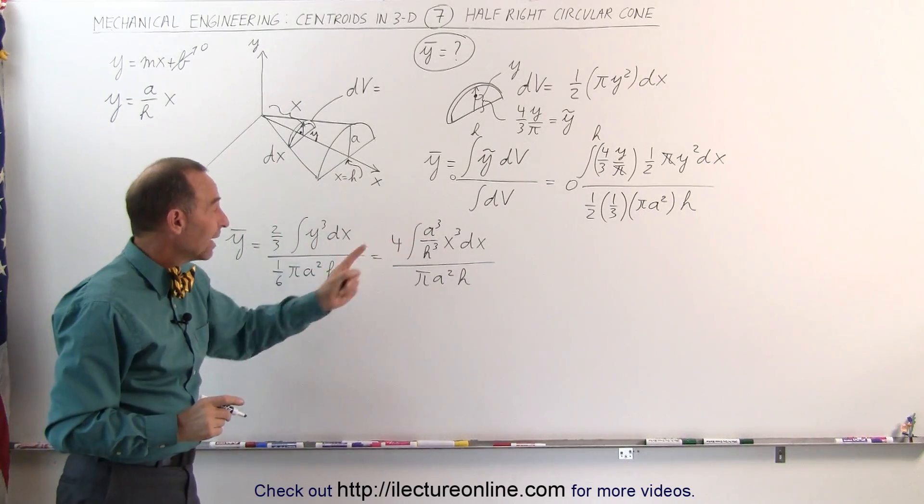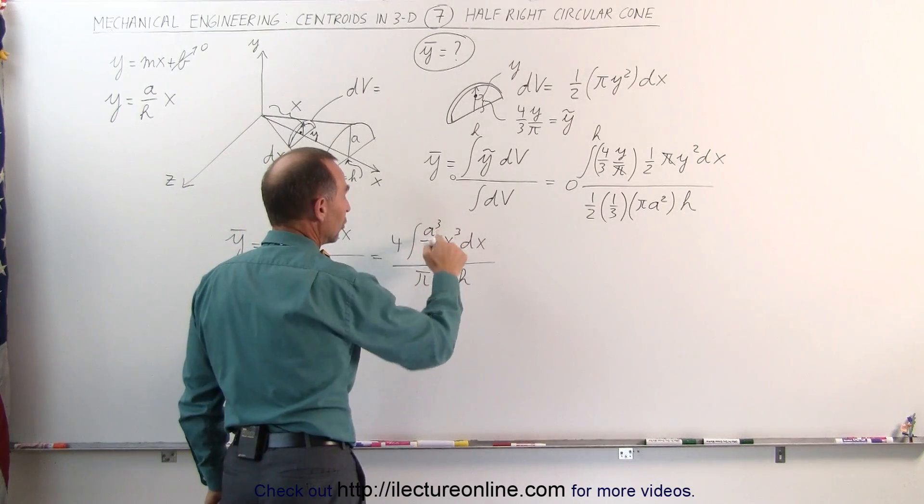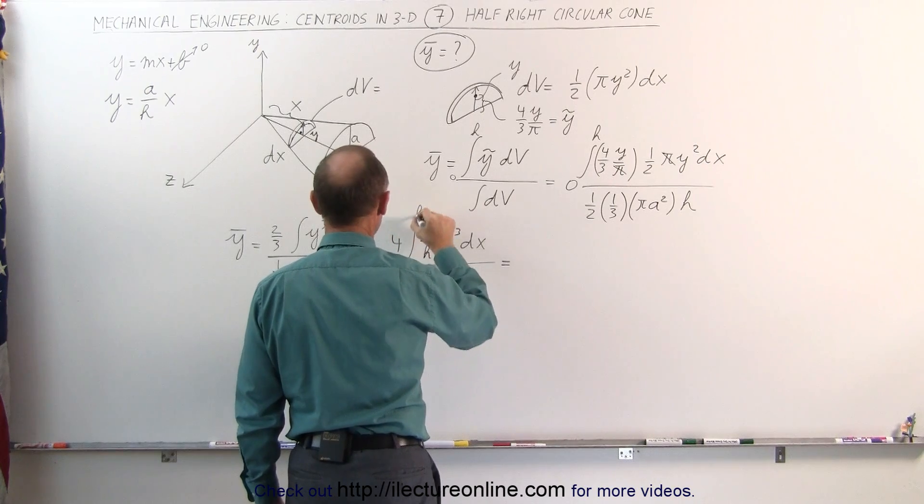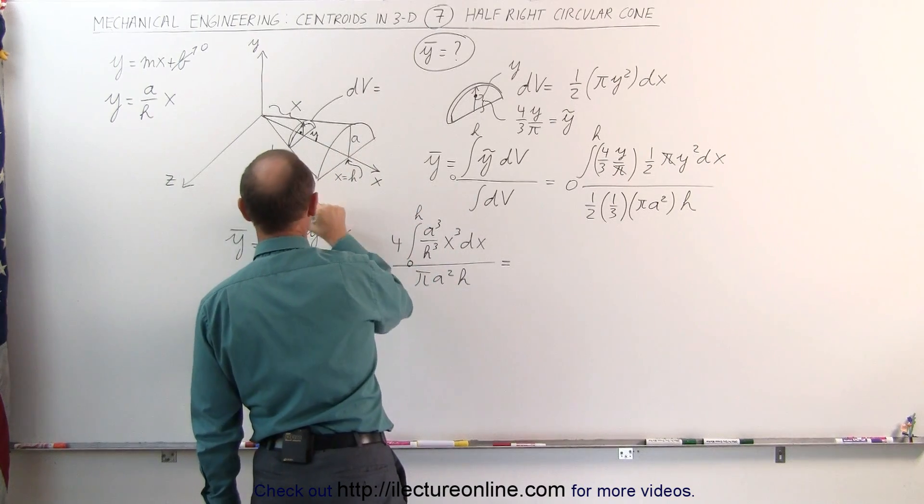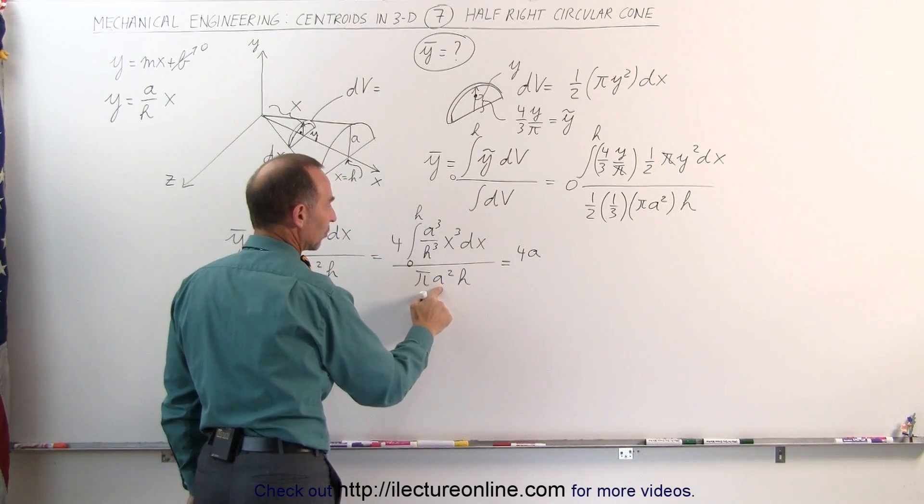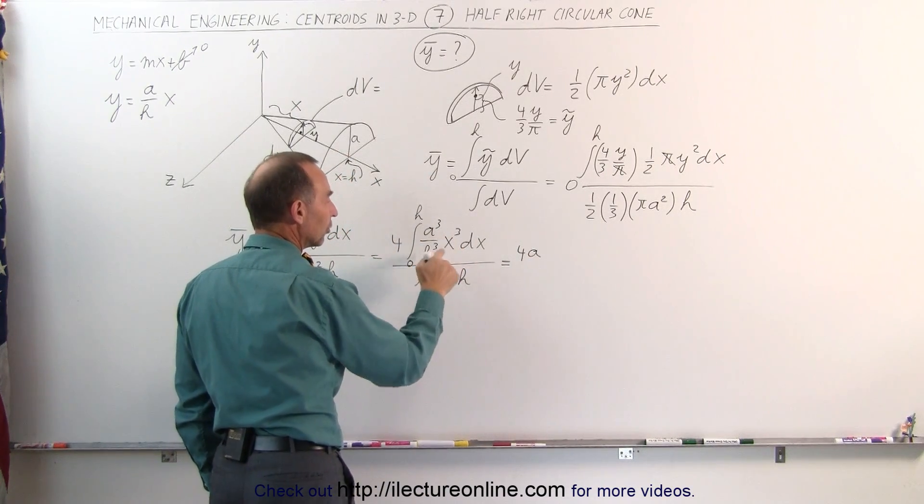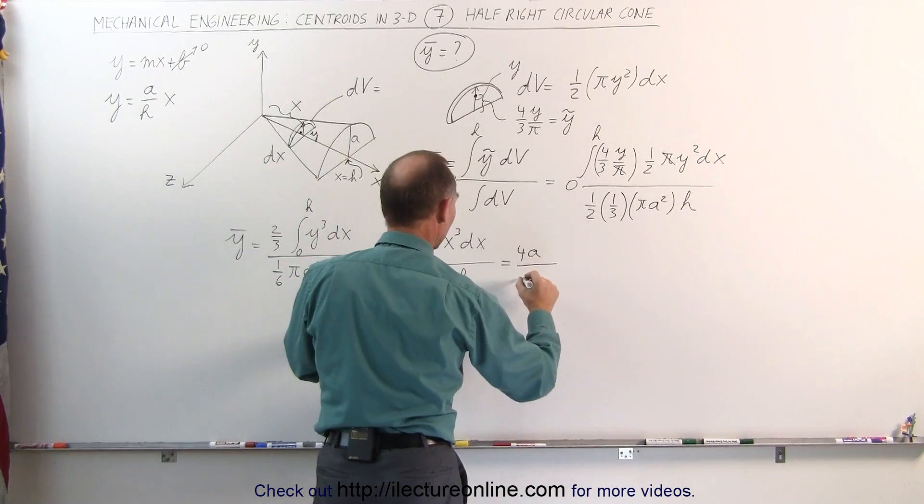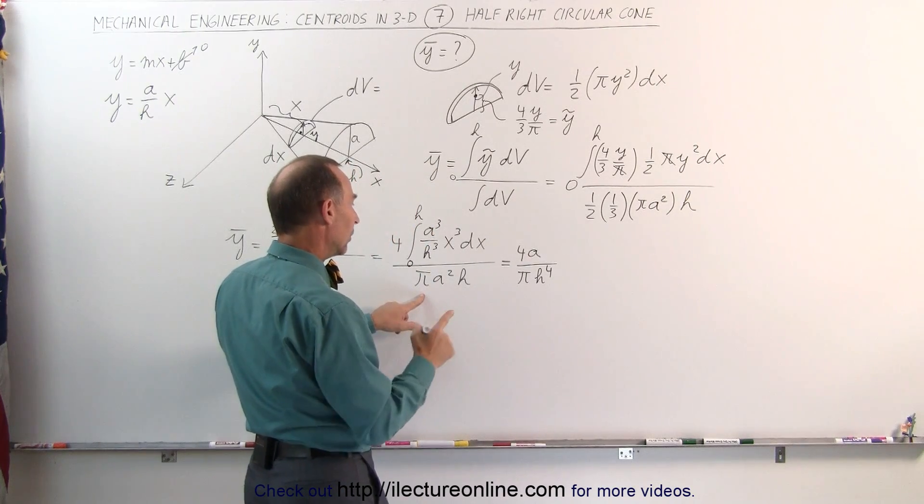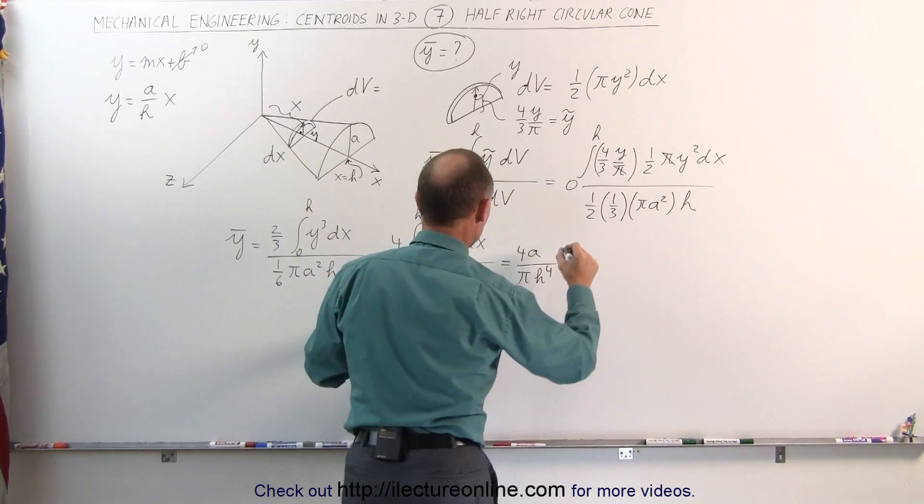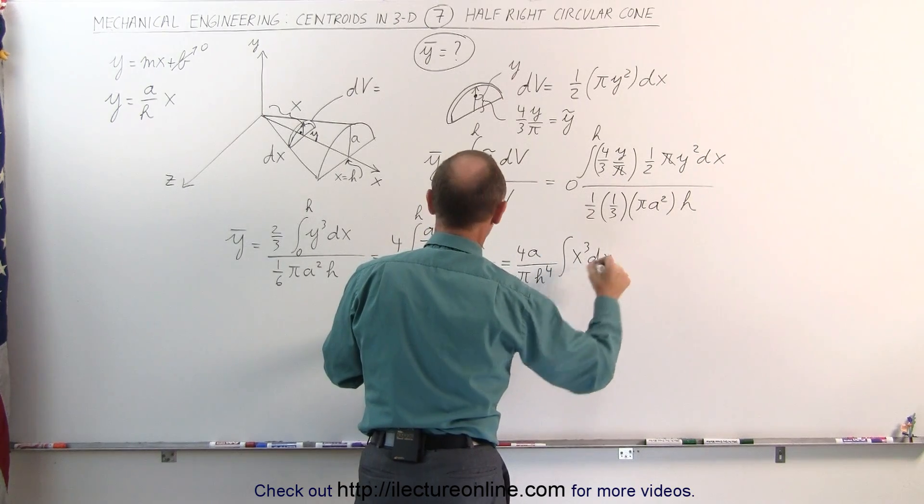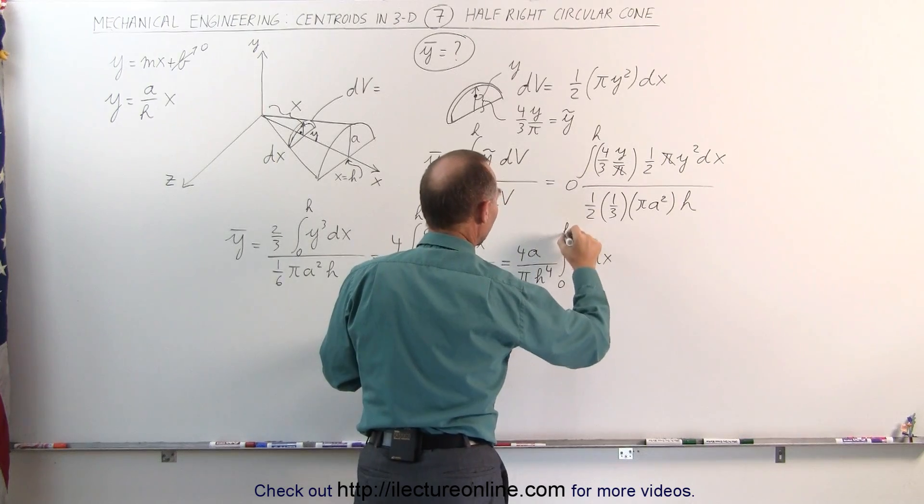Notice that we can take out the a cubed and the h cubed, and we have an a cubed divided by a squared that leaves us with an a. And the limits are still from zero to h. That becomes 4 times a, because a cubed divided by a squared is a. The h cubed can go to the denominator, that makes that an h to the fourth. We still have pi h to the fourth. And all we have left now is in the numerator, we have an integral of x cubed dx, going from zero to h.